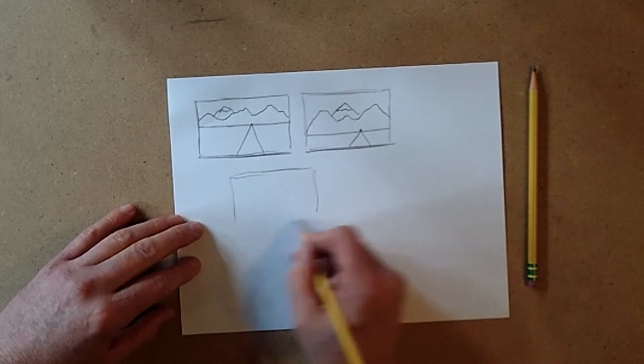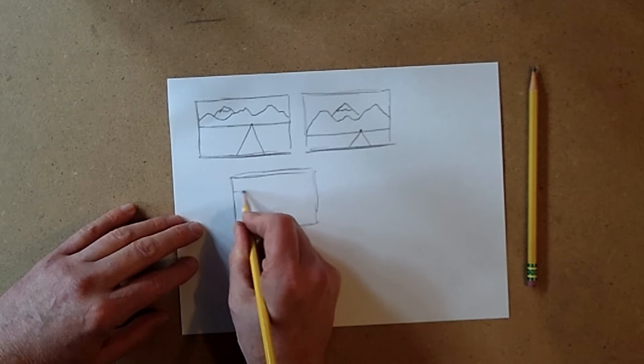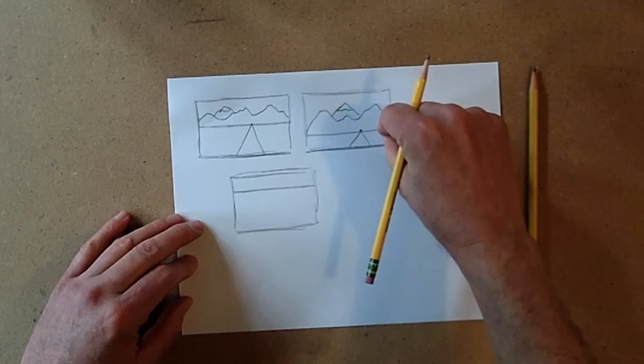Notice what happens when the horizon line is lower. So let's try it again. We'll pick our favorite one to finish in a second. What if we put the horizon line up high? So here it was in the middle, down low, up high.